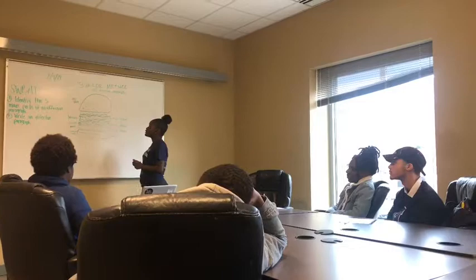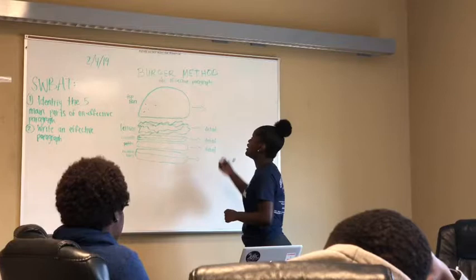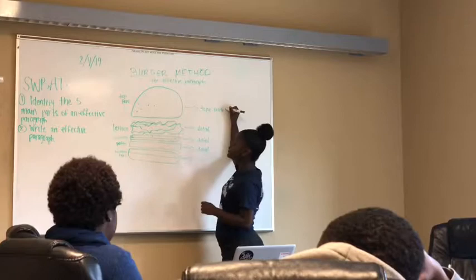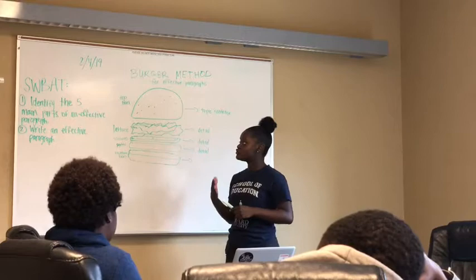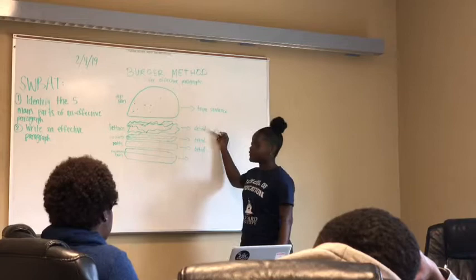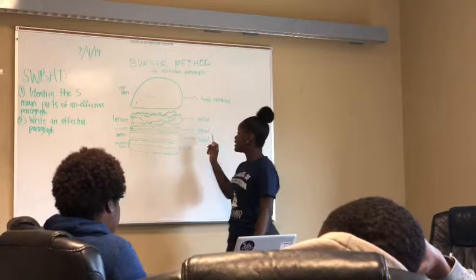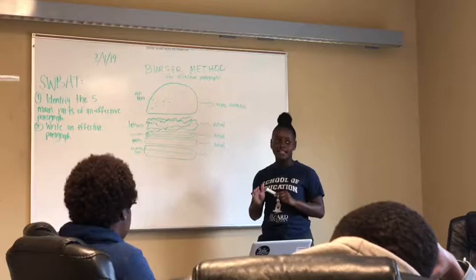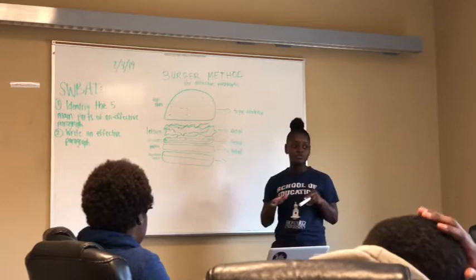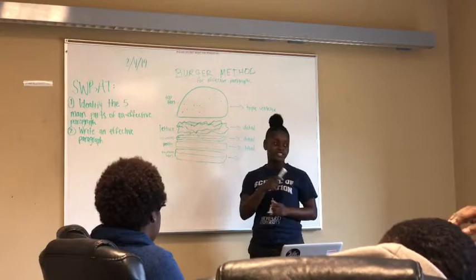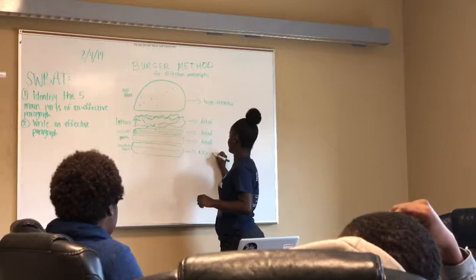We're going to get into what the Berger Method is for effective paragraphs. We want to start off our burger with a top bun, which is our topic sentence. Your topic sentence is basically going to tell the reader what the paragraph would be about and introduce the topic to the reader. Next, we'll have our lettuce, which will be our first detail. Then we move on to our tomato, which will be our second detail. Finally, we'll have our patty, which is our last detail — and the most important detail in our paragraph. We end with the bottom bun, which is our closing sentence.